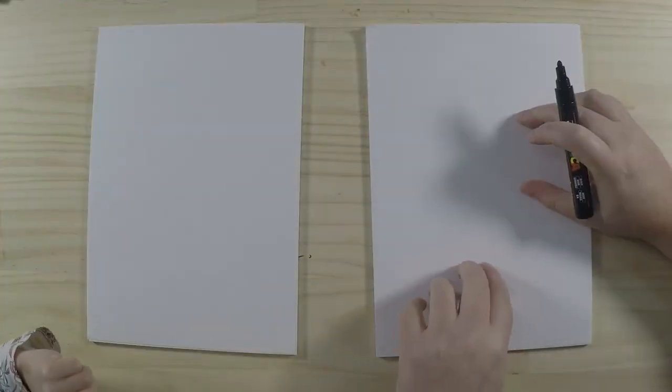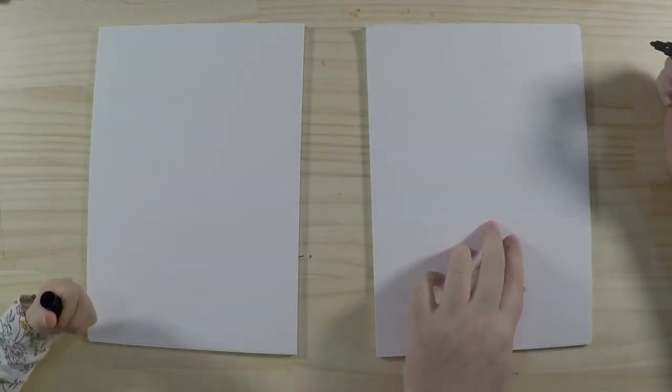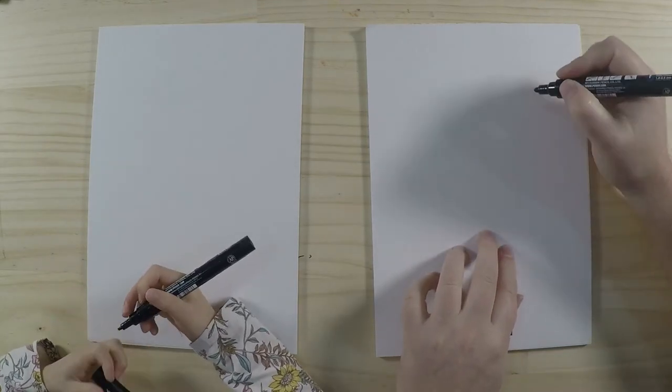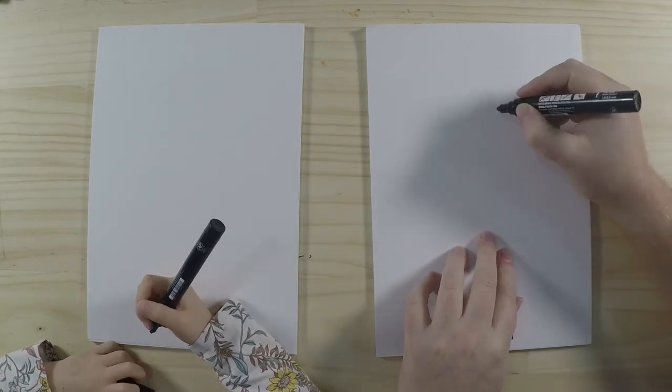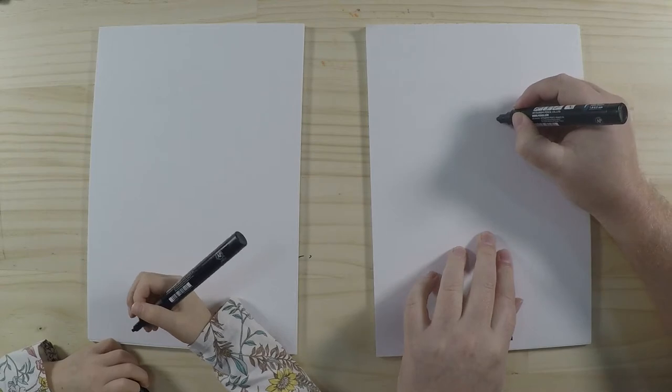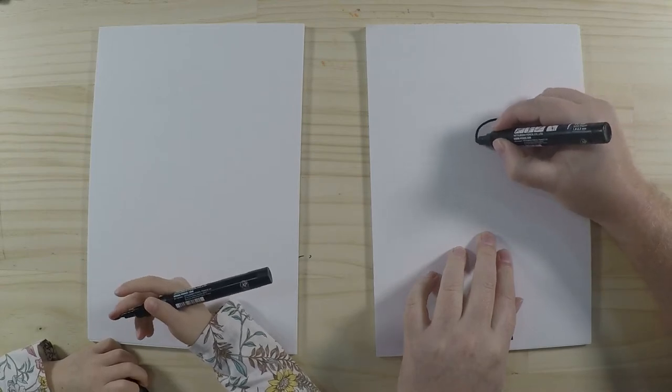All right, so we've got our paper here. I think the first thing we're going to do is draw his visor or his little helmet. So it's a bit of an oval shape there. We'll draw that.